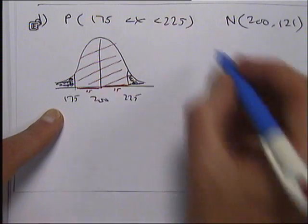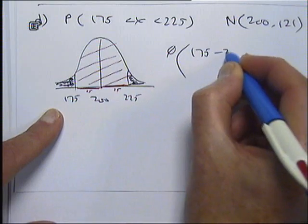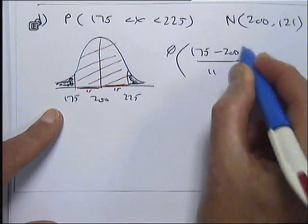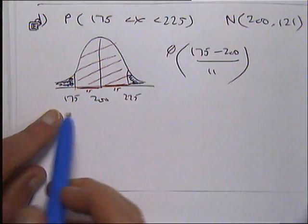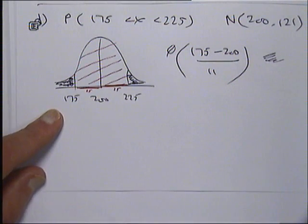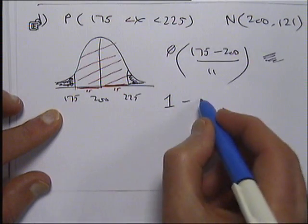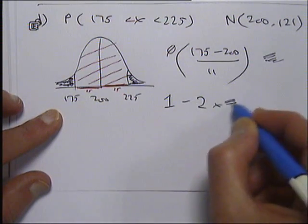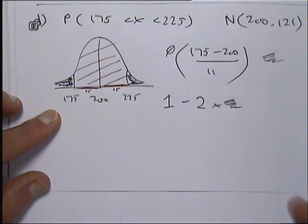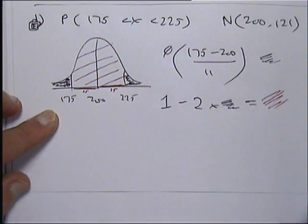This bit over here, this black bit, is nice and easy to find. It's phi of, because it's less than, x minus the mean over standard deviation. That is this black area over here. So that's one black area. But if I do one, which is a whole area, take away two lots of that black area, that will give me the red area that I'm after.